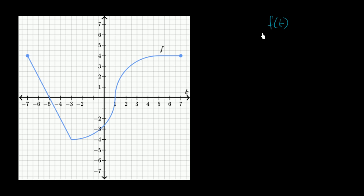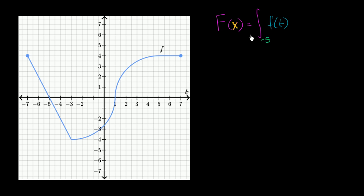And now let's just define another function. Let's call it capital F — and it's not going to be a function of t, it's going to be a function of x. So capital F of x is equal to the definite integral between t is equal to negative 5 and t is equal to x of f of t dt.